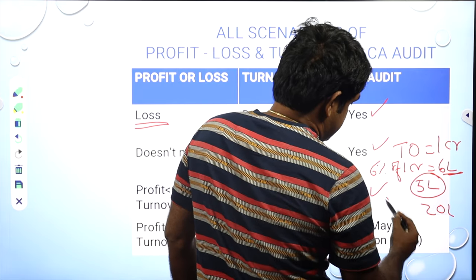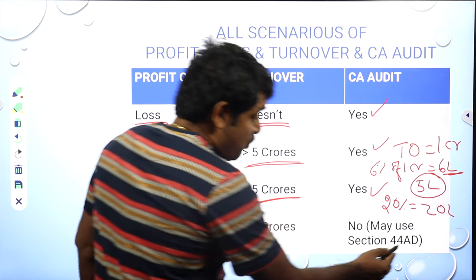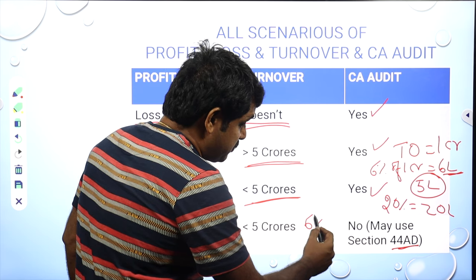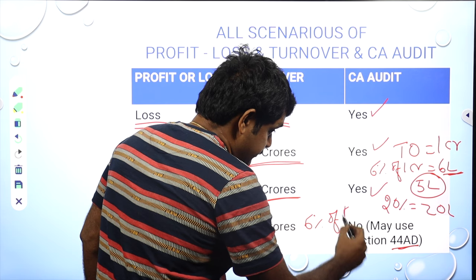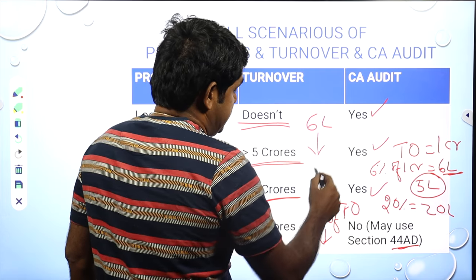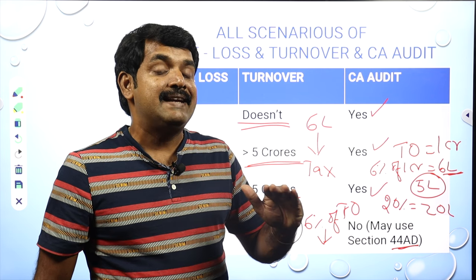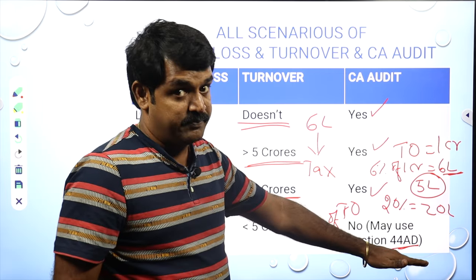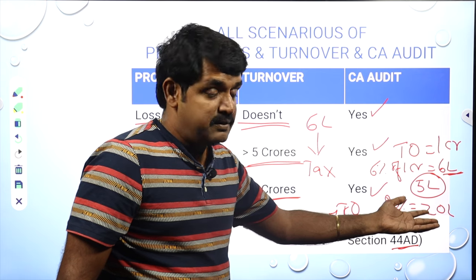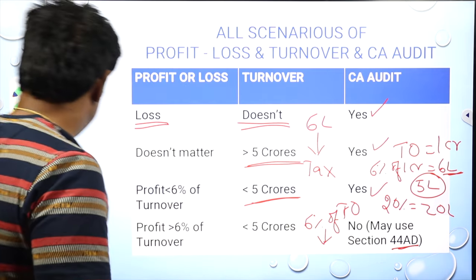If you are making higher than six percent — say 20 lakhs profit, which is 20 percent of one crore turnover — then you can optionally use Section 44AD. Under 44AD, if you declare six percent of your turnover as profit and pay tax according to that slab, you don't need to maintain any books of accounts. This is presumptive taxation. It is optional — if you want, you can declare the full 20 lakhs profit instead.